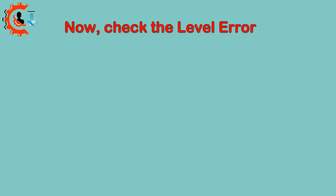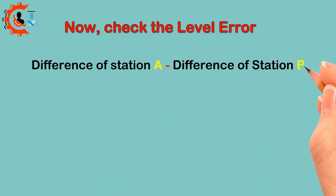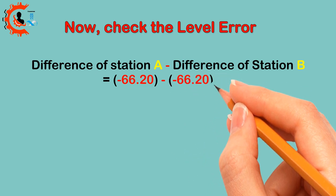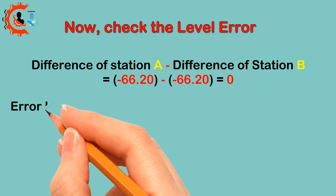6. Now, check the level error. Difference of station A minus difference of station B equals negative 66.20 minus negative 66.20 equals 0.